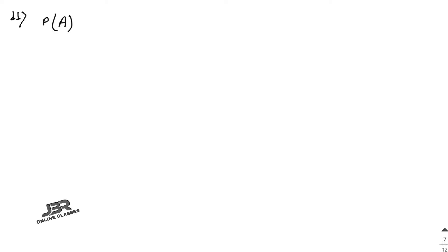In sum number 11, the probability that a contractor will get a plumbing contract is 2/3 and an electric contract is 4/9. So for the plumbing it's 2/3 — that is event A — and for the electric it's 4/9 — that is event B. The probability of getting at least one contract...